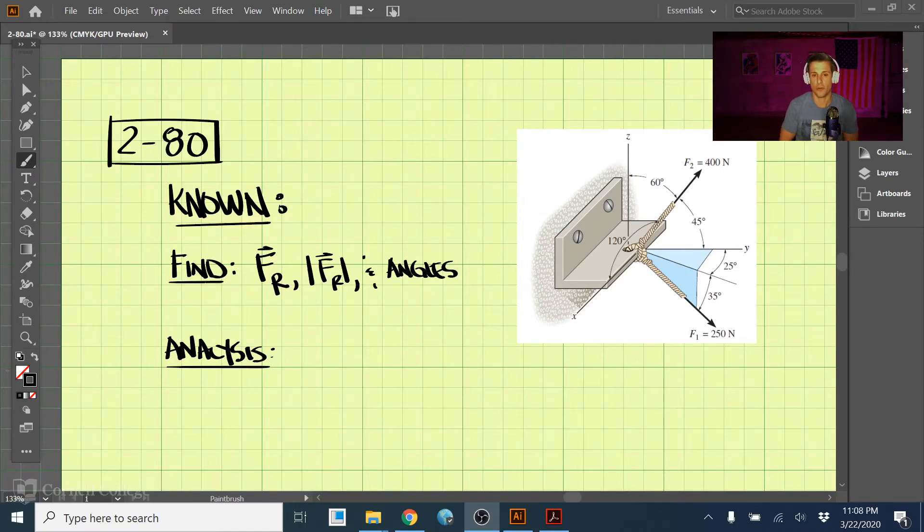All right, so this is problem 2-80. We're given this bracket and it has a few forces on it, and what we're looking to do here is find the resultant force by adding all these two forces together, the magnitude of that force, and all the coordinate direction angles of the resultant force. So let's get started with that.